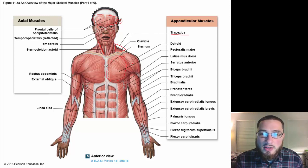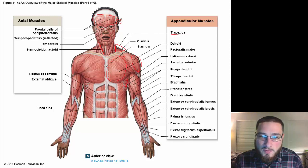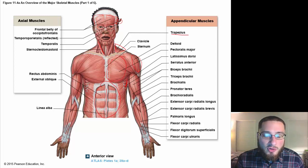You have your pectoralis major — your pecs. The shoulder is going to be your deltoid. Your latissimus dorsi — your lats — is on your side. You have your serratus anterior. You have your rectus abdominis, which is your abs, with a line of connective tissue running through it called the linea alba. And then you have your obliques — your external obliques.